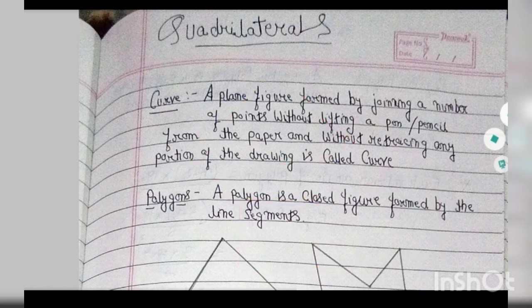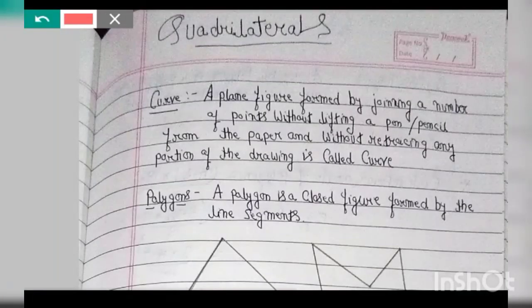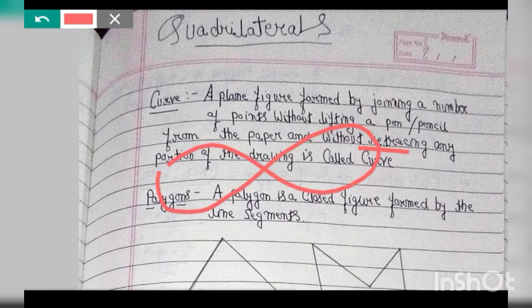So this is the definition of curve. A plane figure formed by joining a number of points without lifting a pen or pencil from the paper and without retracing any portion of the drawing is called a curve.